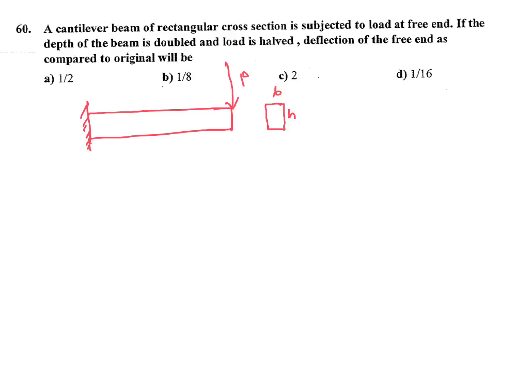We know cantilever beam deflection for point load at free end is P L cubed by 3EI. This formula is very important. So delta is proportional to 1 by I. I for rectangular section is B H cubed by 12.